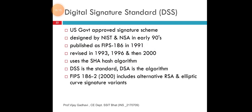DSS — Digital Signature Standards. Here we see the US government approved the signature scheme by NIST and NSA in the early 1990s, published as FIPS 186 in 1991, revised in 1993 and 2000. It uses SHA as the algorithm. Unit number 6 entire chapter is based on the hash algorithm — the Secure Hash Algorithm. You have also learned this with examples. For revision, you must revise unit number 6, lectures 3, 4, and 5 — the link is public now. If any doubt, contact me.